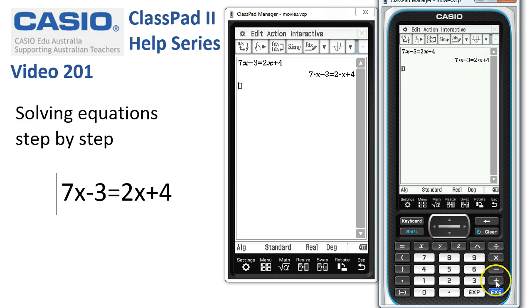So by tapping on the addition sign here, notice that answer has shown up here, which is this previous equation. And we're going to add 3 to it and tap execute. And you can see the first step has been done.